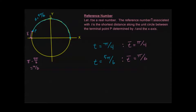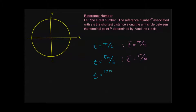Let's do another one — let's say t equals 17π/3. This one's a little big, so let's recall what we covered in an earlier video. Note that 17π/3 is the same as 12π/3 plus 5π/3. Now 12π/3 is the same thing as 4π, so we have 4π plus 5π/3.